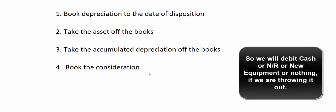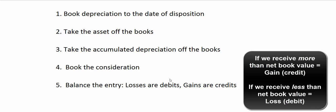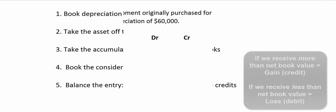We'll book the consideration — consideration means what do we get? Do we get cash? Do we get a note receivable? Whatever it is. And then we'll balance the journal entry. Losses are recorded as debits and gains are recorded as credits. If we sell an asset for more than its net book value, that's going to be a gain. If we sell it for less than its net book value, that's going to be a loss.